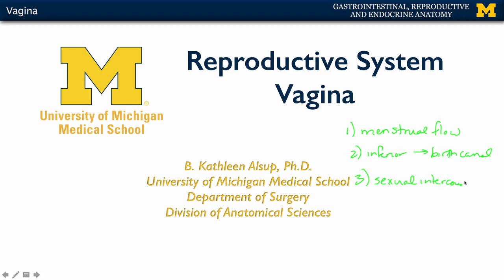We'll talk about specifically what forms the vagina in terms of the muscular tissue, which is very capable of stretching during labor as well as during sexual intercourse.